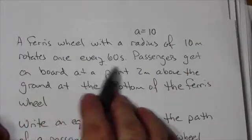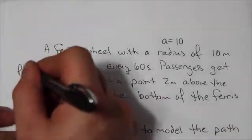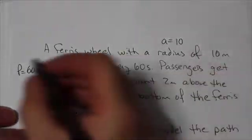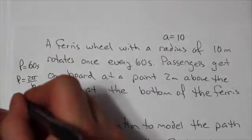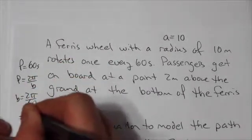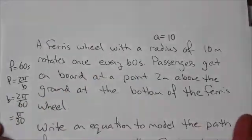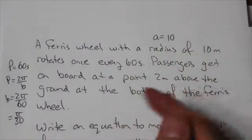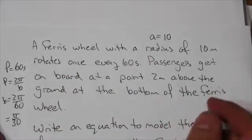It rotates once every 60 seconds. Well, right there, what's that telling us? That's the period. Period is 60 seconds. Now, that tells us, because we know that period is 2π over b, so we can say b is equal to 2π over 60. So b is going to equal π over 30. I don't even know what the question is asking at this point, but those bits of information are given to me so that I can determine a and b. So first sentence, I already know something about this problem.